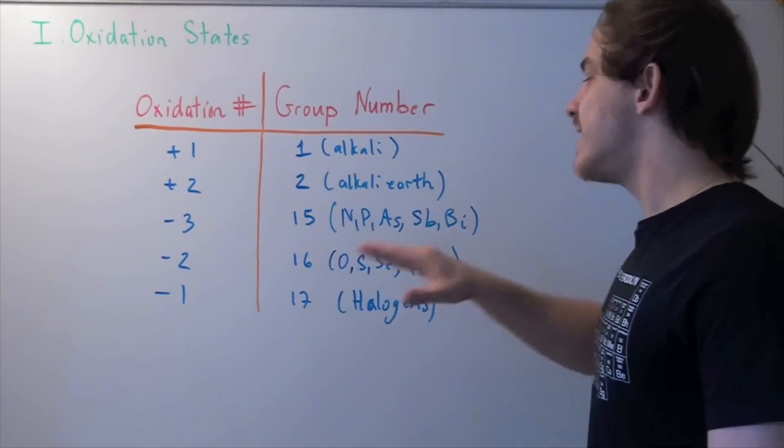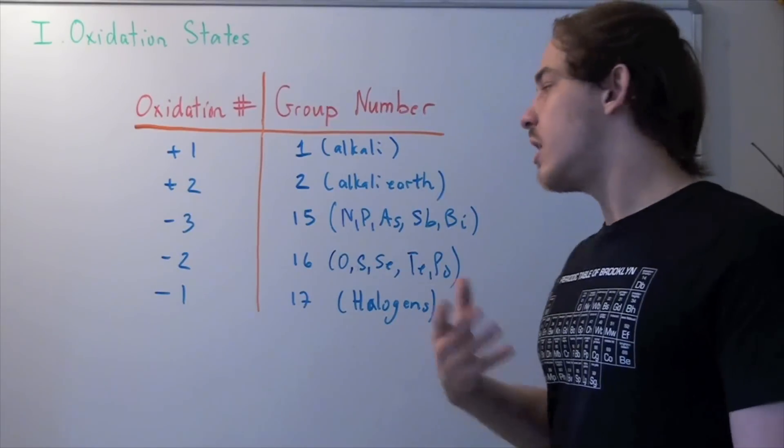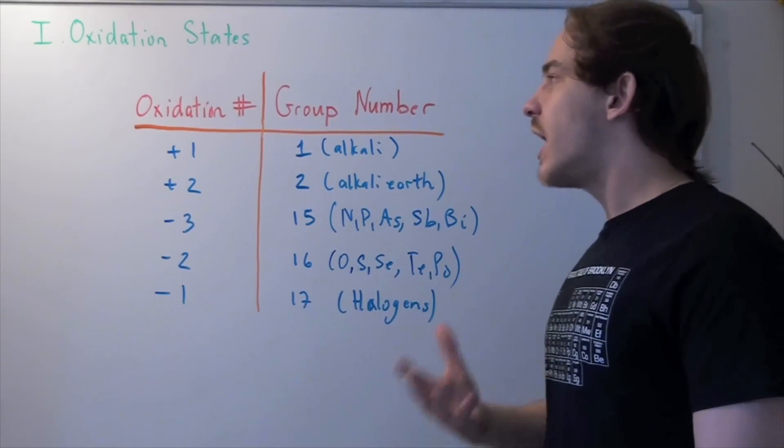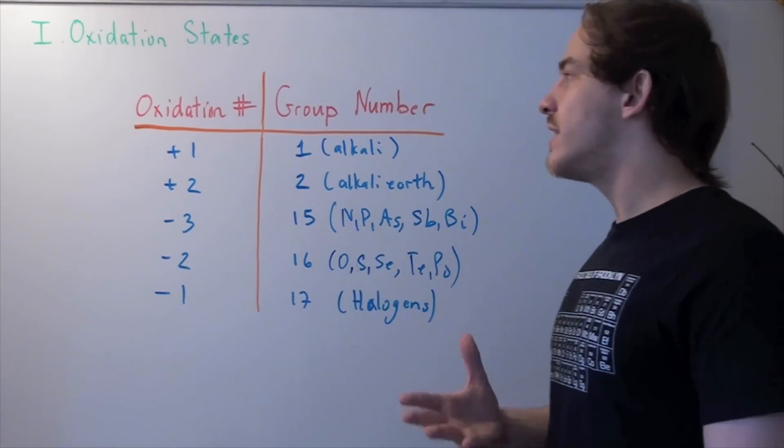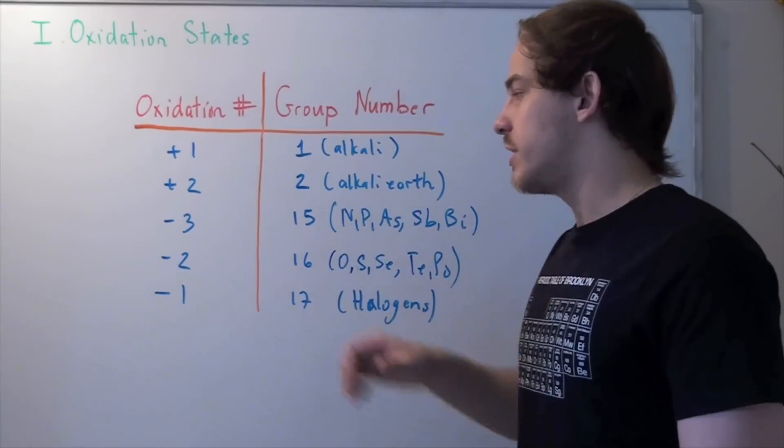Group number 16, including oxygen, sulfur, and so on, are assigned an oxidation state of negative two. And finally, halogens are assigned an oxidation state of negative one.